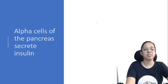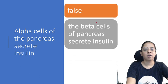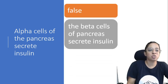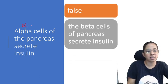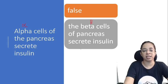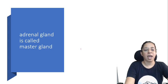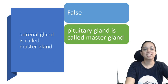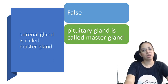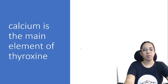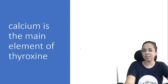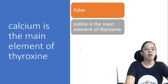Alpha cells of the pancreas secrete insulin — false; it is the beta cells that secrete insulin. Adrenal gland is called the master gland — false; it is the pituitary gland that is called the master gland.